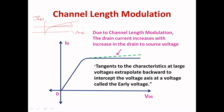You can see here the green line — if you trace it backward, that is a tangent to the characteristics at larger voltage. The larger voltage extrapolated backward intercepts the voltage axis at what is called the Early voltage. Your Early voltage will always be negative for NMOS, because you are going from right to left. For PMOS, the Early voltage will be positive.